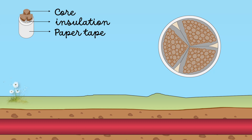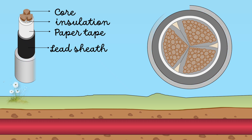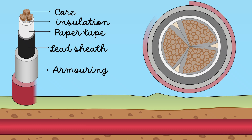To protect the insulation from moisture, a lead sheath is provided over the insulation. For mechanical protection, steel armoring is employed. In order to protect the armoring from atmospheric conditions, a layer of fibrous material is provided over the armoring. This is known as serving.